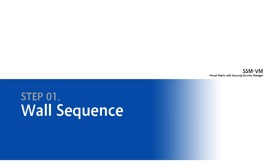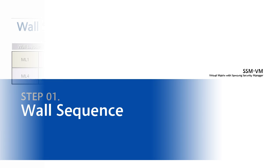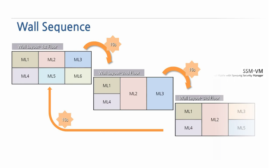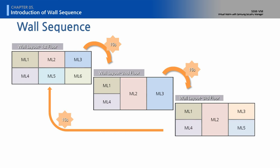Step 1: Wall Sequence. It automatically displays the wall layout on walls in the predefined order, by the pre-assigned time interval.